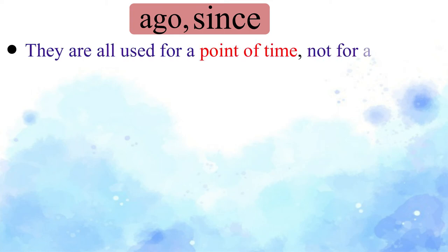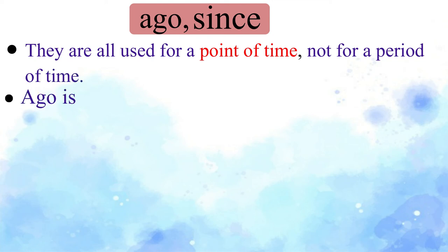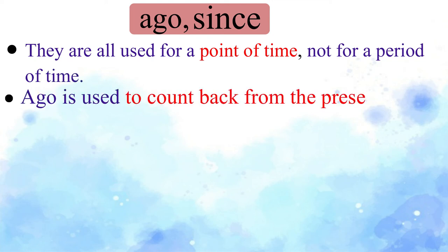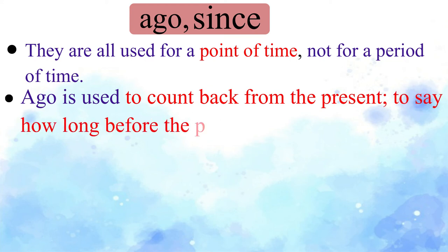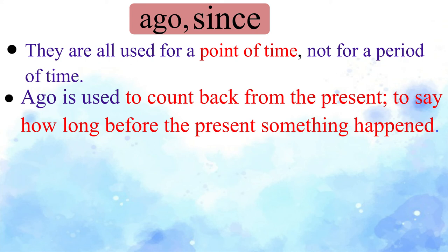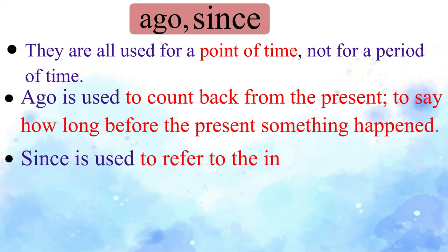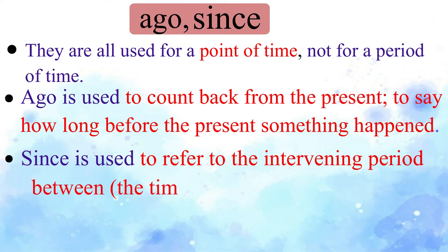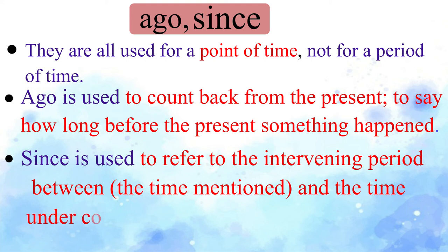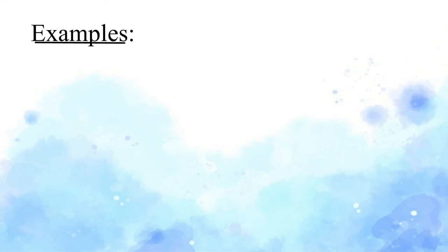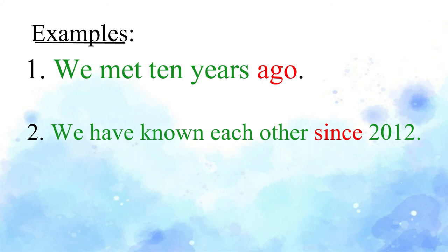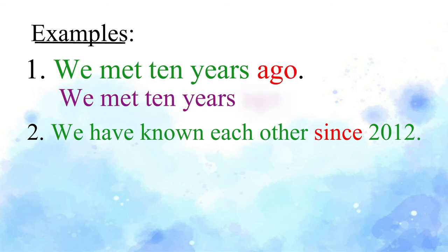Ago and Since. They are both used for a point of time, not for a period of time. Ago is used to count back from the present to say how long before the present something happened. Since is used to refer to the intervening period between the time mentioned and the time under consideration. Please repeat these sentences. We met 10 years ago. We've known each other since 2012.